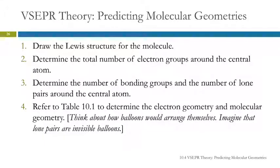This is the instructions your book gives, and most of the instructions are okay. So start by drawing the Lewis structure, figure out the total number of electron groups, determine the number of bonding groups and the number of lone pairs.